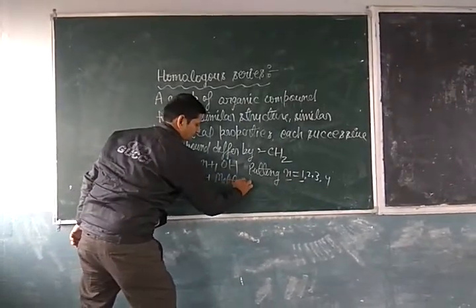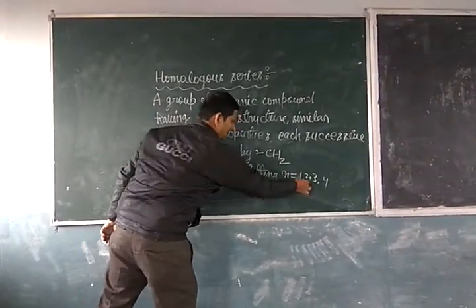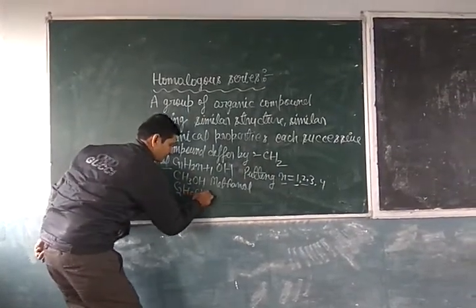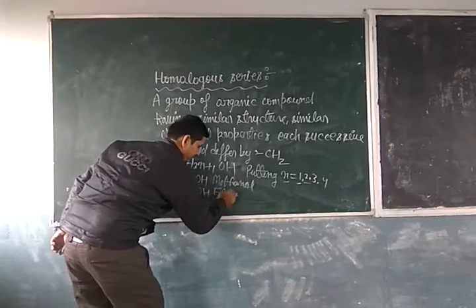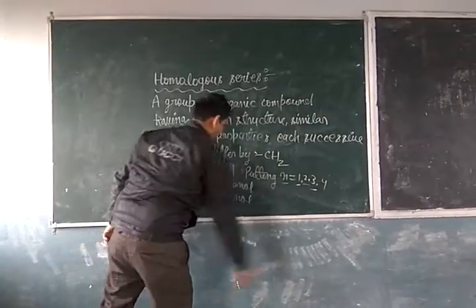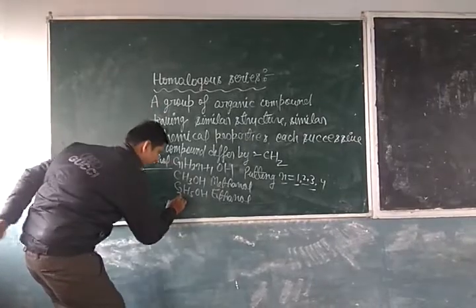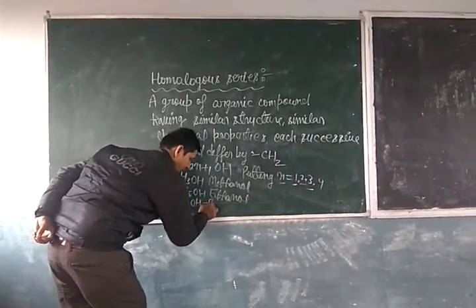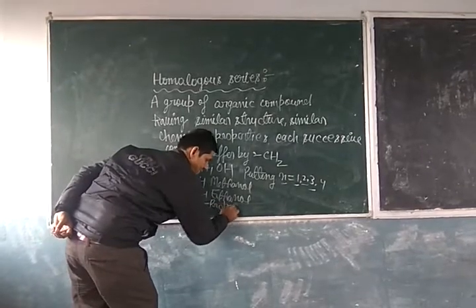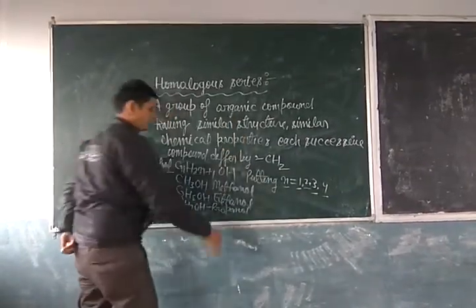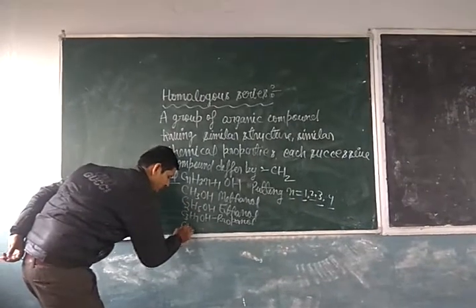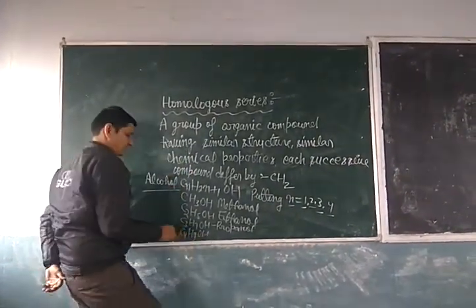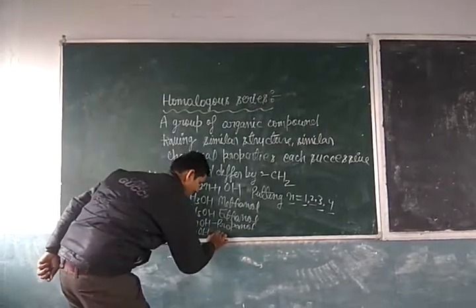This is methanol. When we put n equal to 2, we get C2H5OH. This is ethanol. When we put n equal to 3, we get C3H7OH. This is propanol.